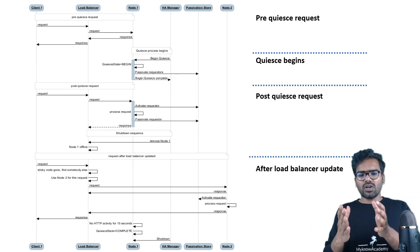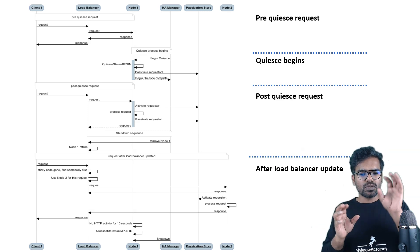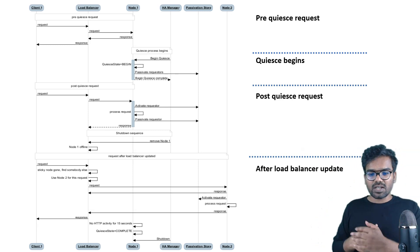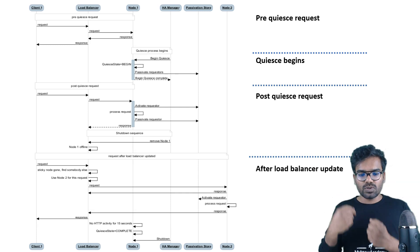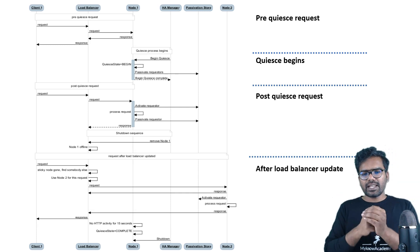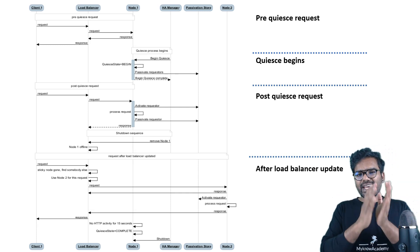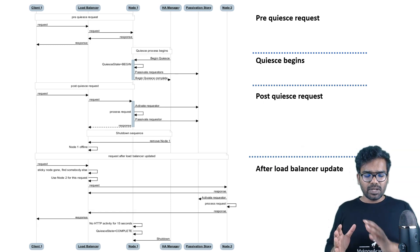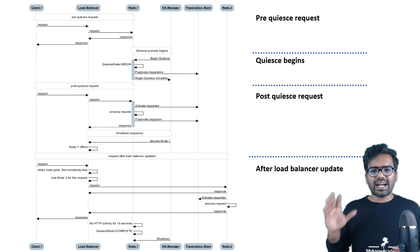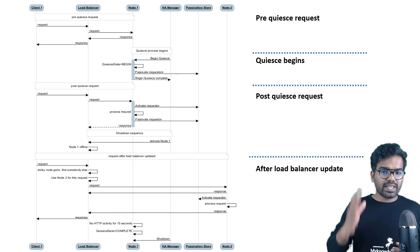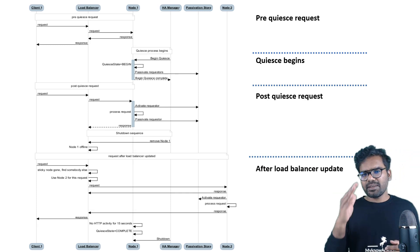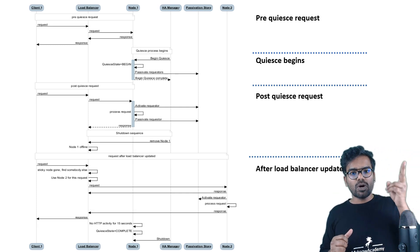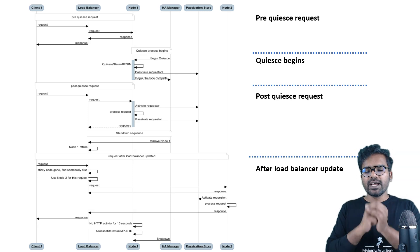Nodes can be different nodes. For now you see two nodes — node one on the third column and node two on the last column — so two nodes are available in the cluster. Then you also have the HA Manager. HA refers to high availability, and when you talk about a cluster, high availability is very critical. We already briefly talked about that in the cluster management module.